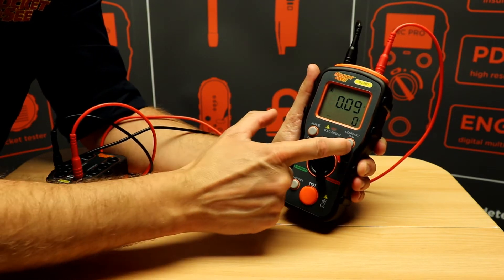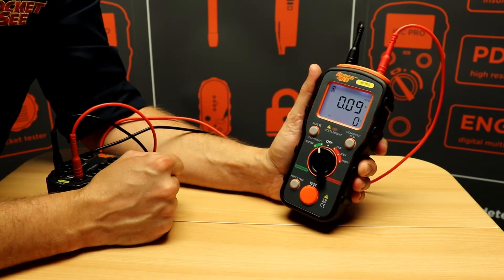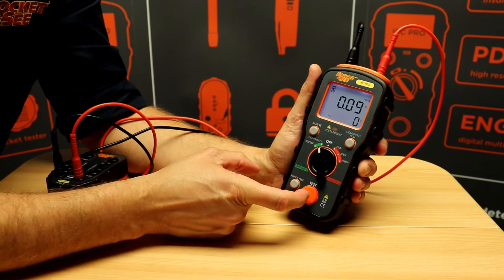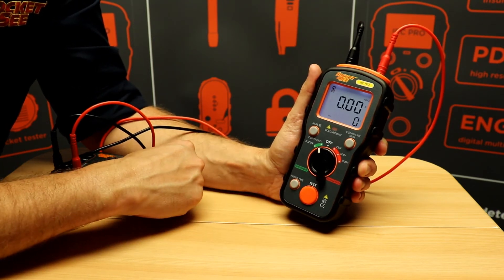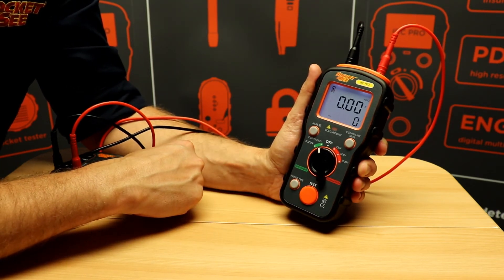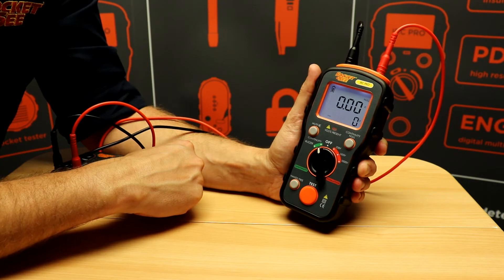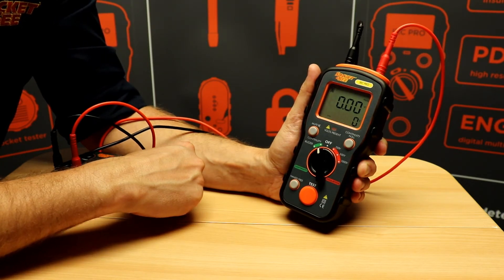To get rid of this value of the test leads we'll press Continuity Null. That takes into account that resistance so if we do a test it's then zeroed our results. This null value will be remembered until another Continuity Null test has been carried out.